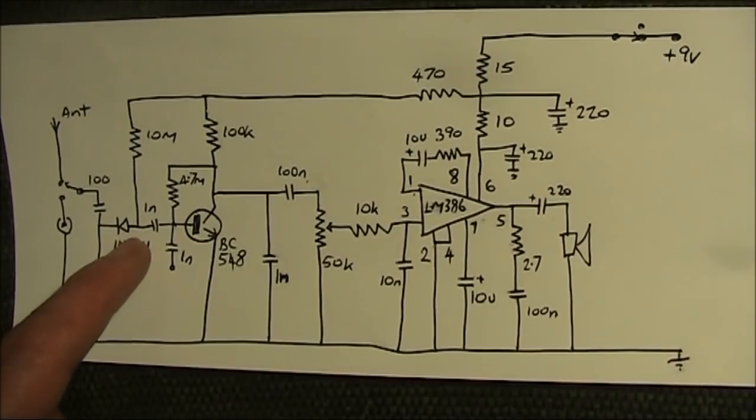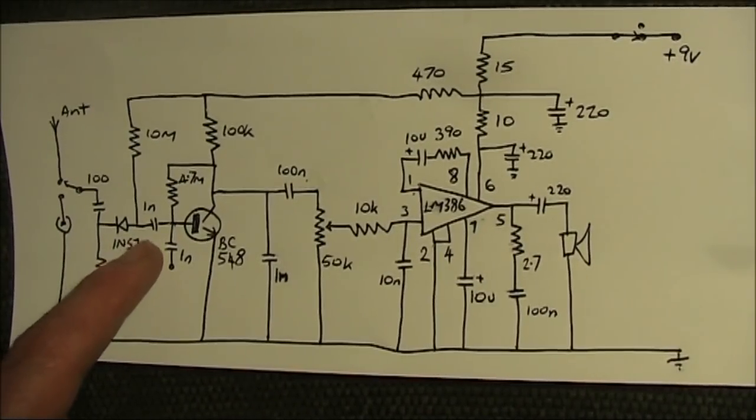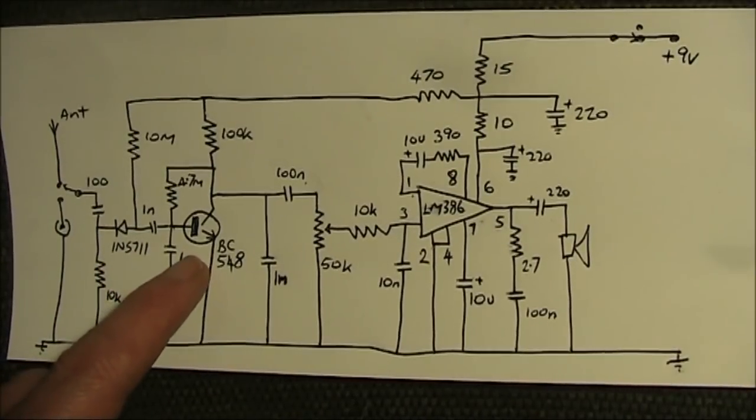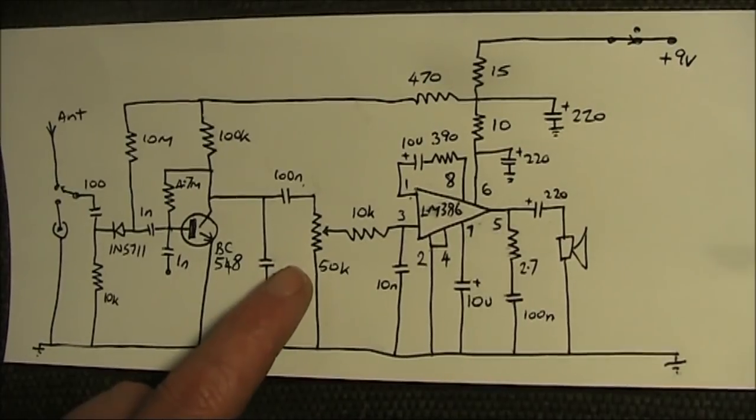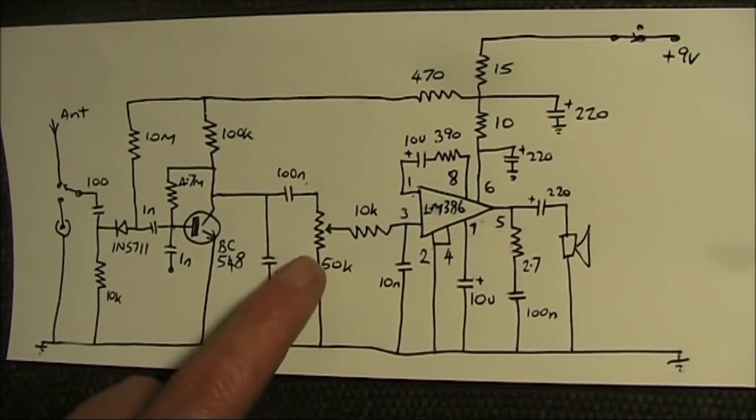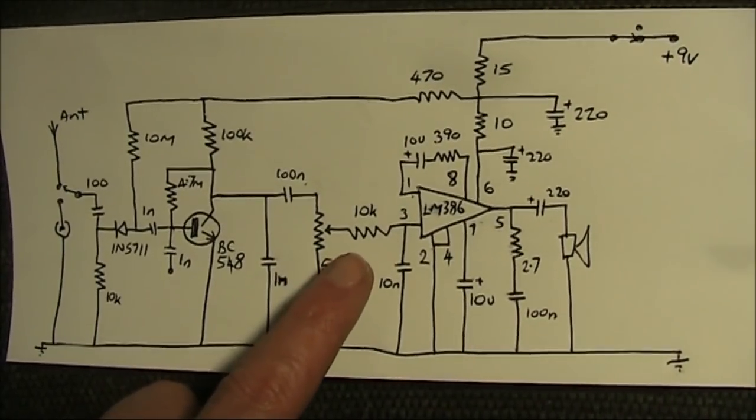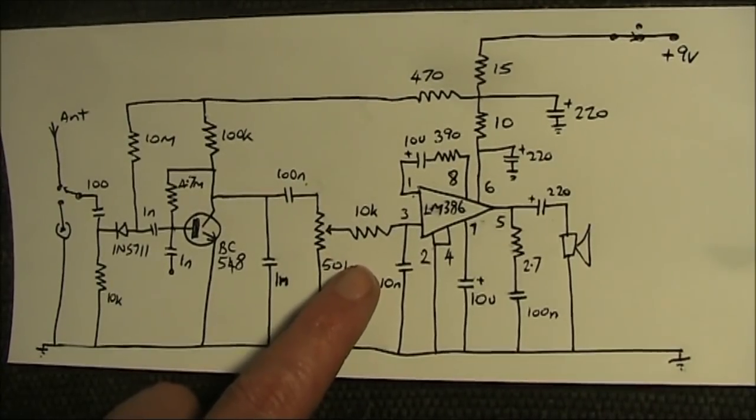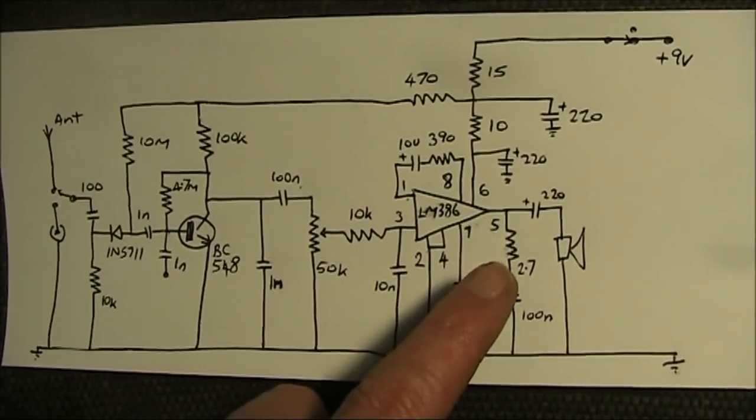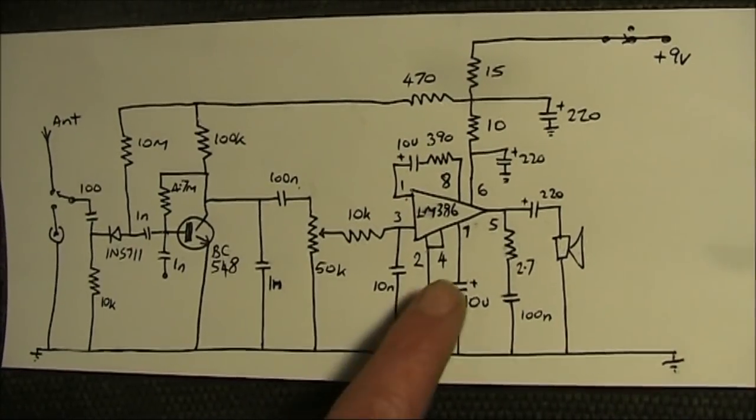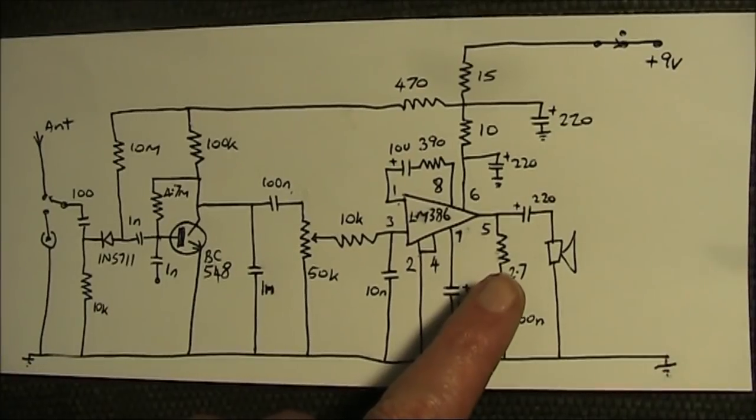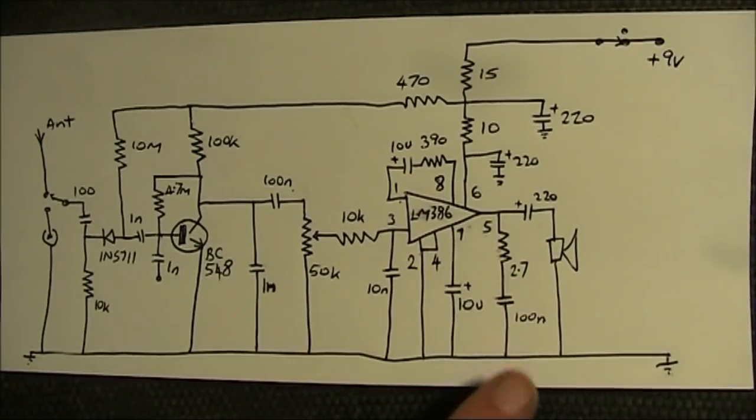The signal from the diode is very low level audio, so it's amplified by this BC548 transistor, then through a potentiometer volume control, and then a standard LM386 audio amplifier circuit. It's powered by a 9V battery, a 6-12V supply would be fine, and you can connect it to either headphones or a speaker.